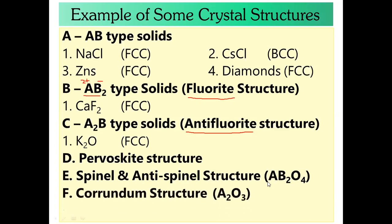Corundum structure is called oxides as it contains trioxides. Examples include Al2O3. The type is GKC — boron B2O3. This type of example is studied in corundum.